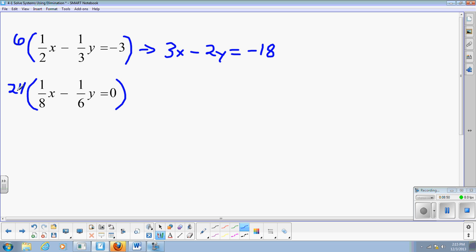So now we have 24 times each of these terms. 24 times 1 is 24. 24 divided by 8 is 3. So I'm going to put this over here. 3x. And now I have 24 times 1. 24 divided by 6 is 4. So minus 4y. Equals. And 0 times 24. Oh, our friend, 0. All right. Now let's look at these two.